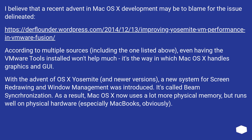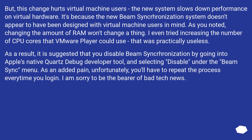A recent change in Mac OS X development may be to blame for the issue. According to multiple sources, even having VMware tools installed won't help much. It's about the way Mac OS X handles graphics and GUI. With the advent of OS X Yosemite and newer versions, a new system for screen redrawing and window management was introduced called beam synchronization. As a result, Mac OS X now uses a lot more physical memory but runs well on physical hardware. However, this change hurts virtual machine users — the new beam synchronization system slows down performance on virtual hardware because it doesn't appear to have been designed with virtual machine users in mind.